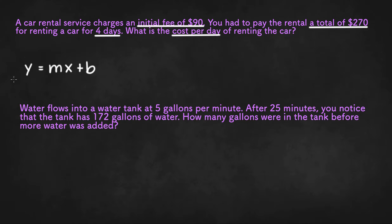So y is a total number. In this case, since we're talking about money, it'll be the total cost. You had to pay the rental a total of $270, so $270 must be the y value. And m is a rate of change, usually indicated by the words per or each. We have what is the cost per day, so m is the variable we're going to solve for.